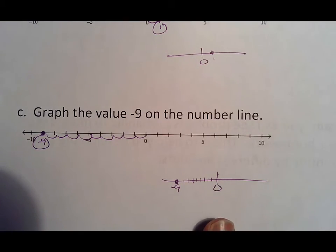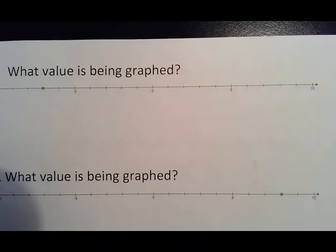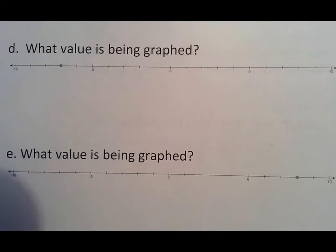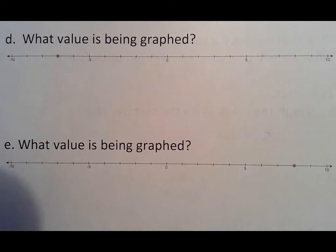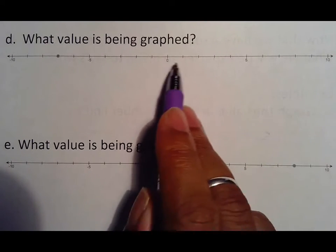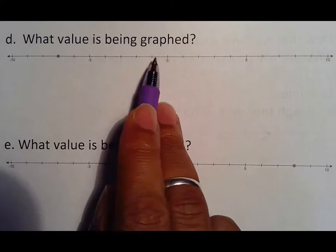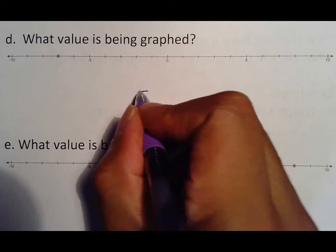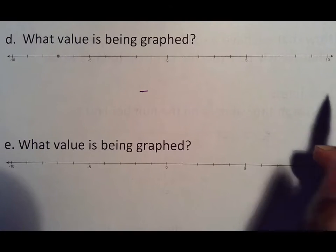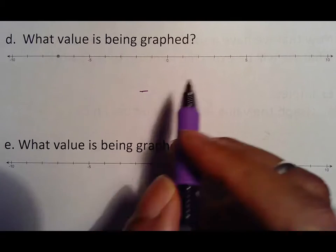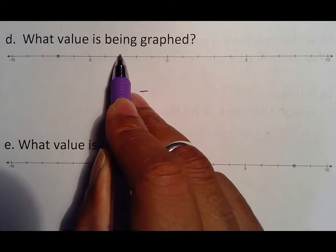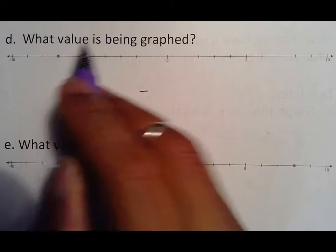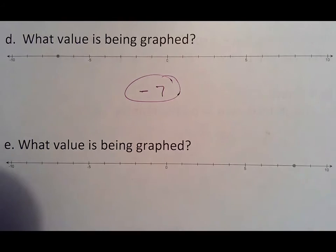On your homework it's going to look more like this — you'll be asked to figure out what value is being graphed. You have to look at it and count. This dot is to the left of zero, which means it's obviously negative. You can see it's between negative five and negative ten, so count: one, two, three, four, five, six, seven — it's obviously negative seven.